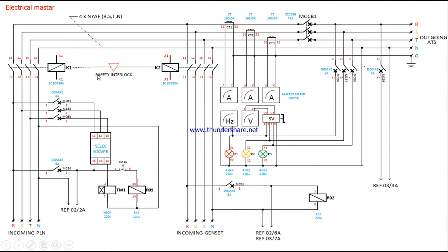For the mechanical interlock, a mechanical component is connected to achieve it. For the electrical interlock, it is made through the control circuit only. Now we will see how the electrical interlocks are made. From the main incoming supply, a 600-volt phase failure relay is connected.